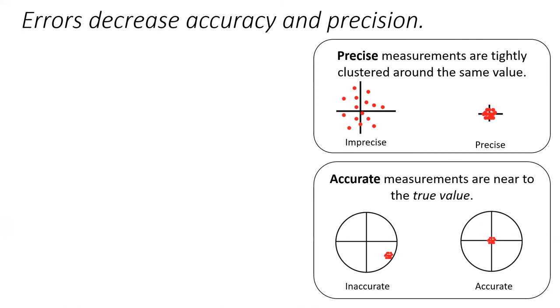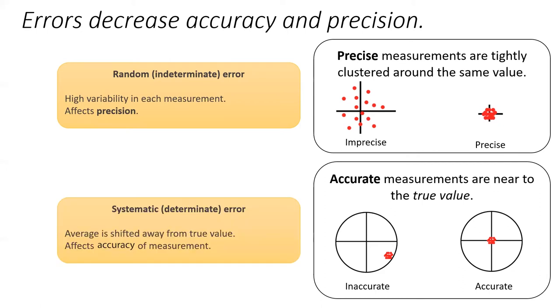While there are errors in measurements, accuracy and precision will suffer. There are two types of errors. Random or indeterminate errors affect the precision of a measurement by increasing the variability of each measurement. An example of a random error would be trying to weigh yourself during an earthquake. The value would be jumping all over the place. Systematic or determinate errors affect the accuracy of a measurement by shifting the average of the measurement. An example of a systematic error would be attempting to weigh yourself while wearing a heavy backpack. Each measurement would be increased by the weight of the backpack.